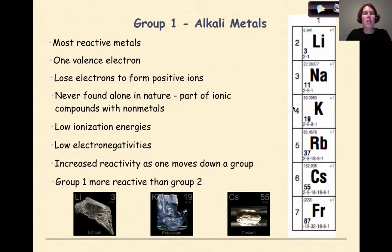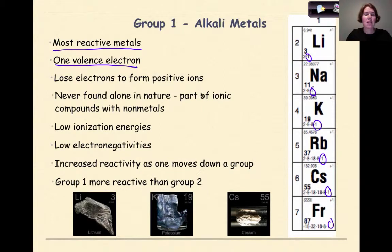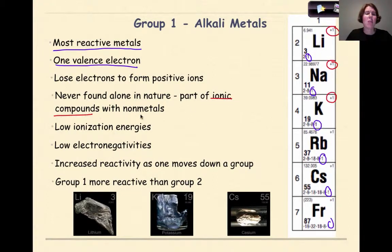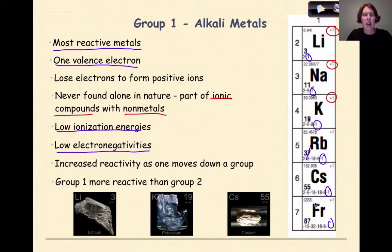Group 1 are the alkali metals, and they are our most reactive metals. They only have one valence electron, and as we go down the group, all the electron configurations are going to end with the number one. They lose electrons to form positive ions — all have a plus one ion because they lose that one valence electron. They're never found alone in nature, and will be part of ionic compounds with non-metals. They have low ionization energies, low electronegativities, increased reactivity as one moves down a group, and group 1 is more reactive than group 2. These are our most metallic elements on the periodic table.